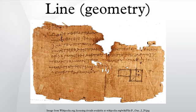The notion of line or straight line was introduced by ancient mathematicians to represent straight objects with negligible width and depth. Lines are an idealization of such objects. Until the seventeenth century, lines were defined like this: the line is the first species of quantity, which has only one dimension, namely length, without any width nor depth, and is nothing else than the flow or run of the point, exempt of any width.